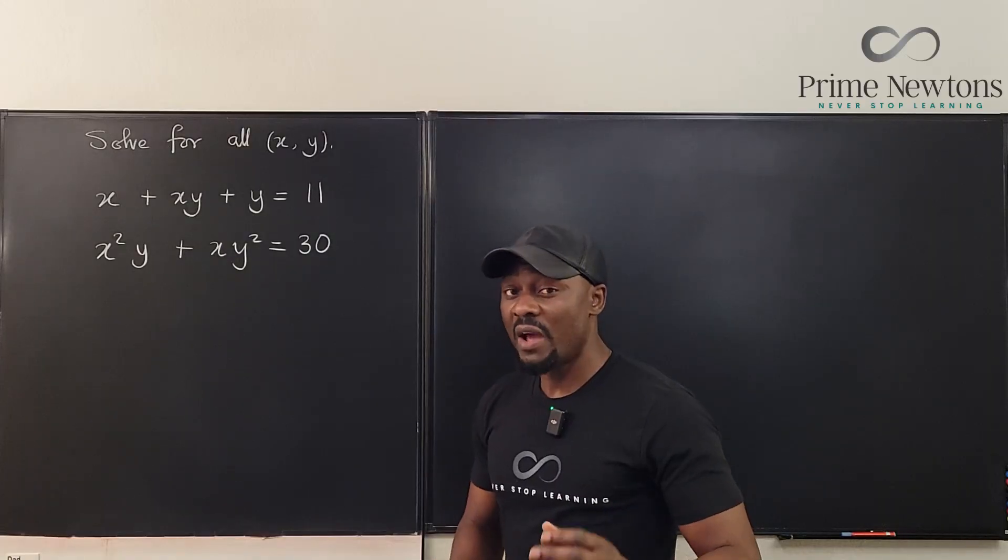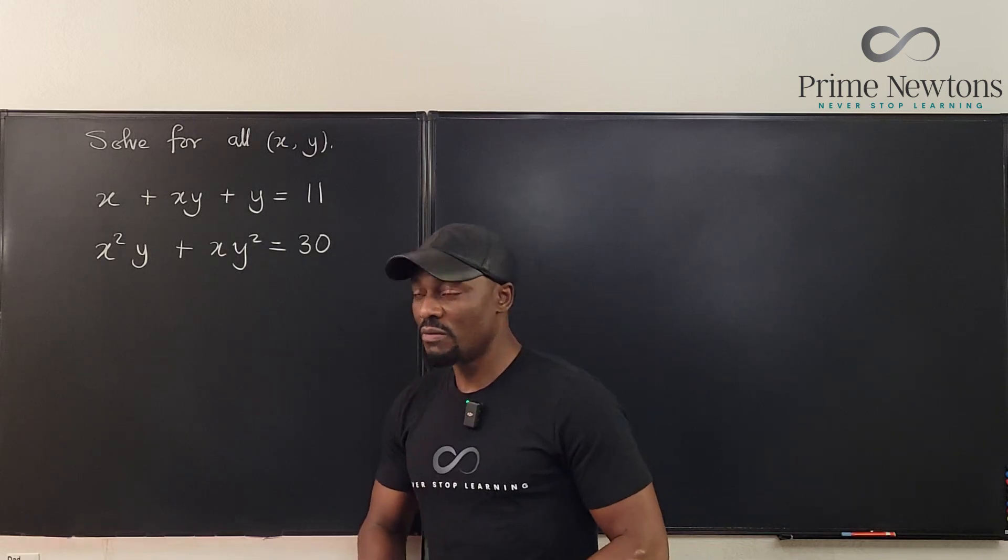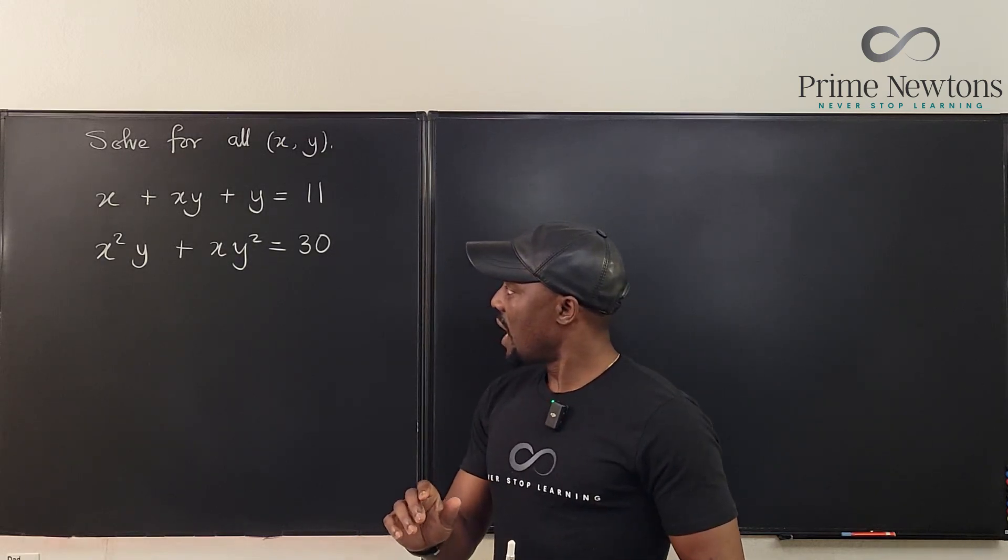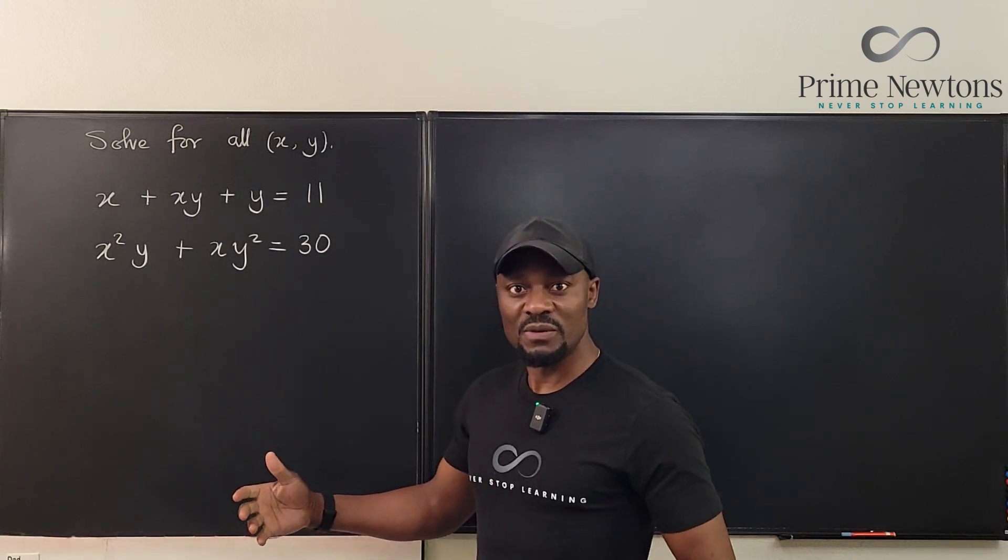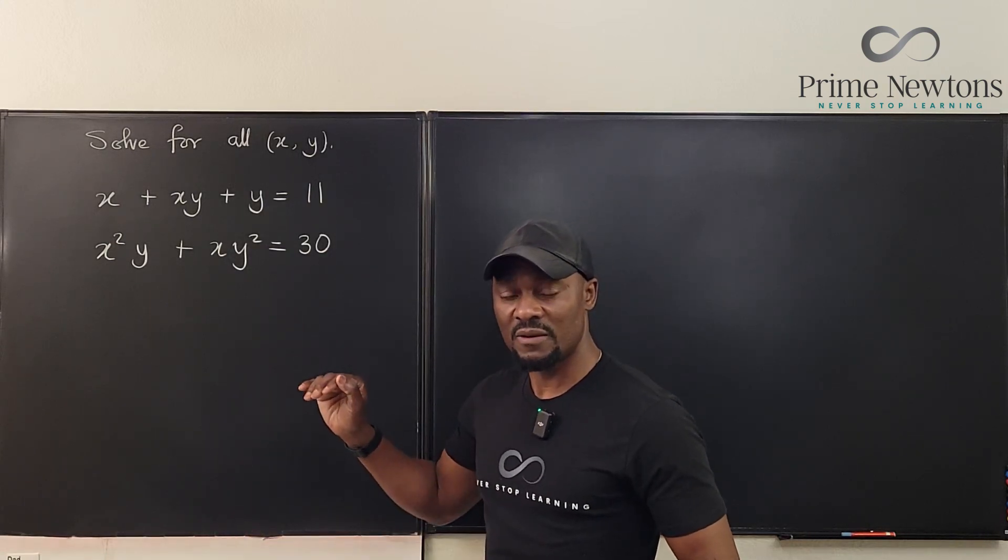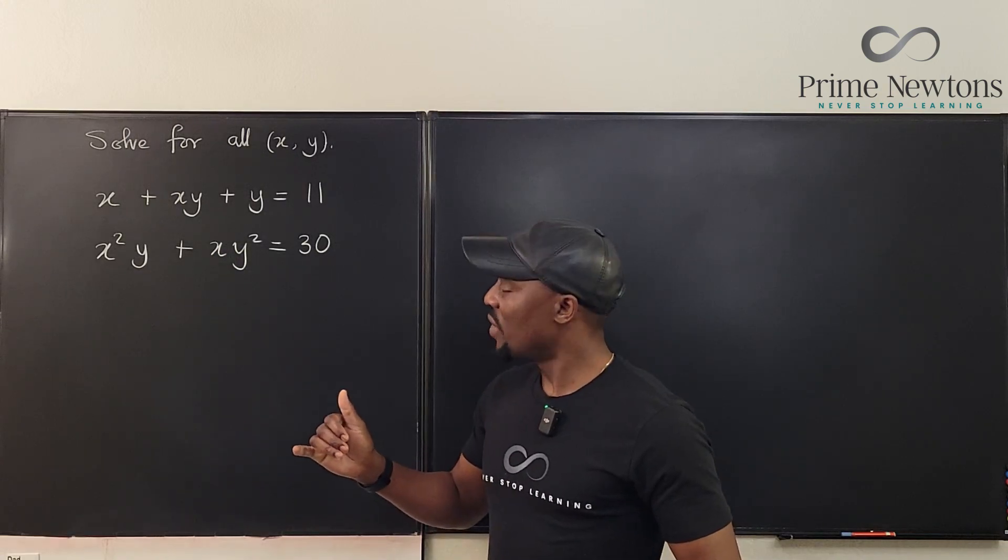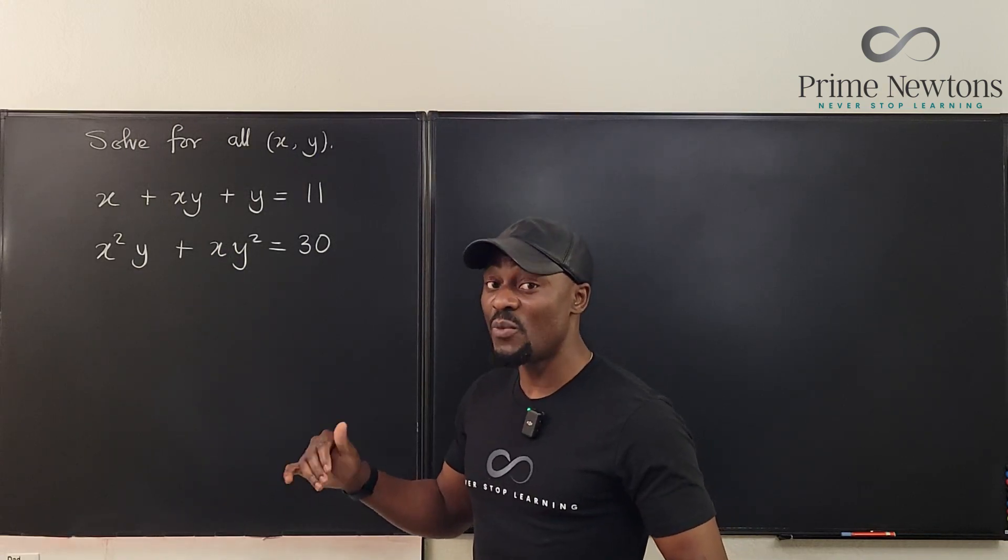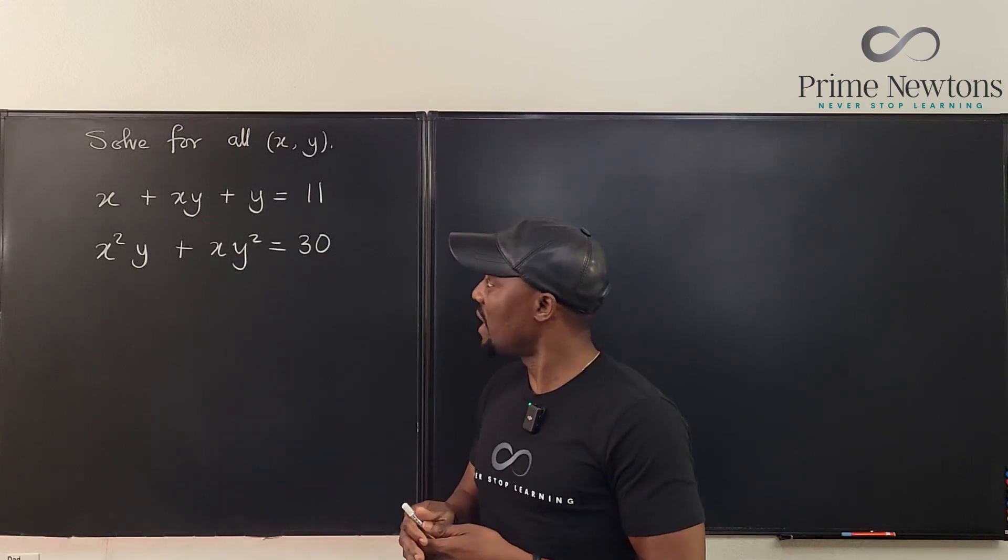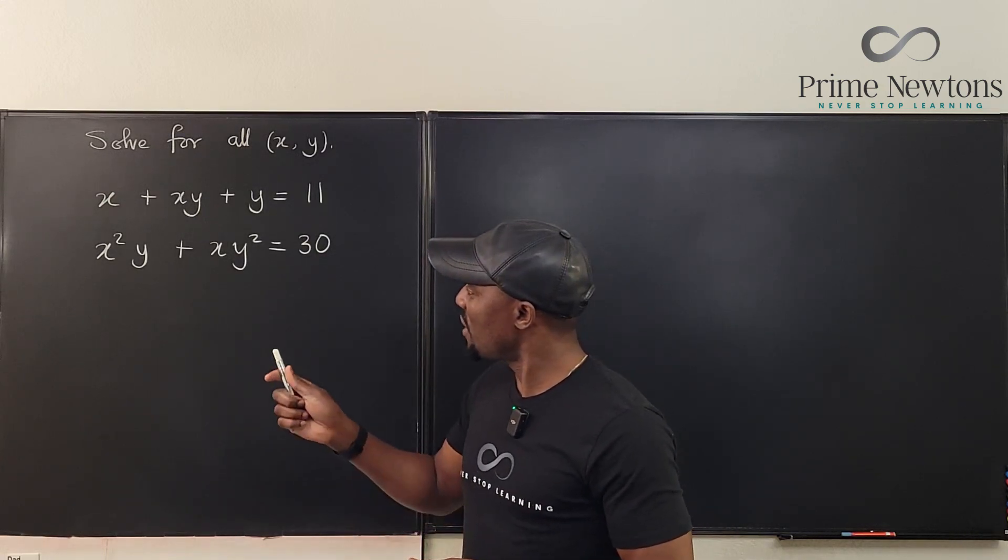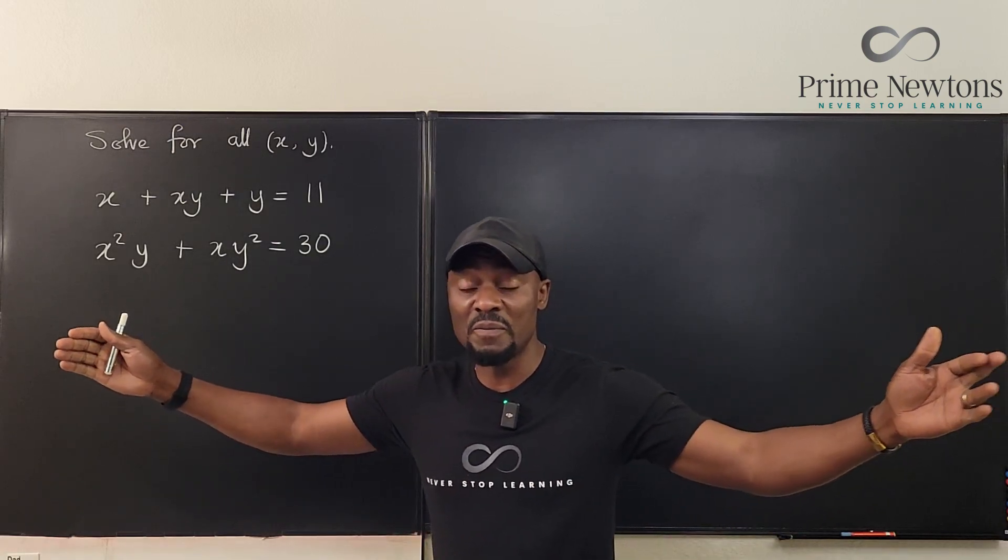As you can see, we have two variables and two equations. So what you might think of is maybe I should do a substitution from one equation into the other. The problem you're going to run into is that whatever you try to substitute in one equation, you can't just isolate one thing completely. For example, from this first equation you're going to have some crazy stuff and the equation is going to become maybe a quartic or quintic equation.